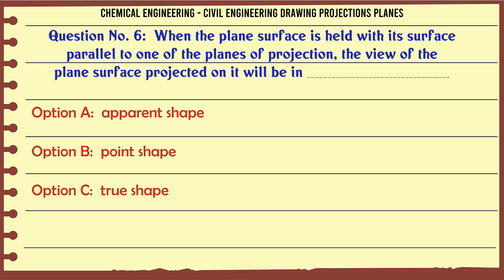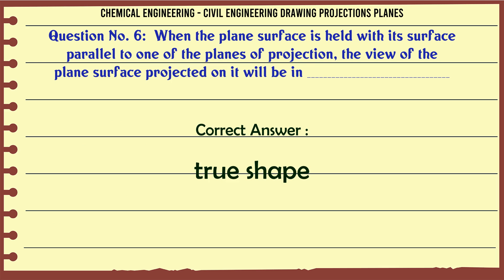When the plane's surface is held with its surface parallel to one of the planes of projection, the view of the plane's surface projected on it will be in: A. Apparent shape, B. Point shape, C. True shape, D. Line shape. The correct answer is True shape.